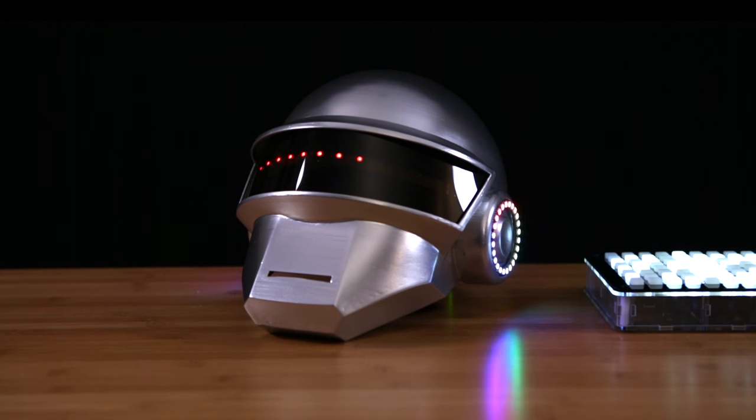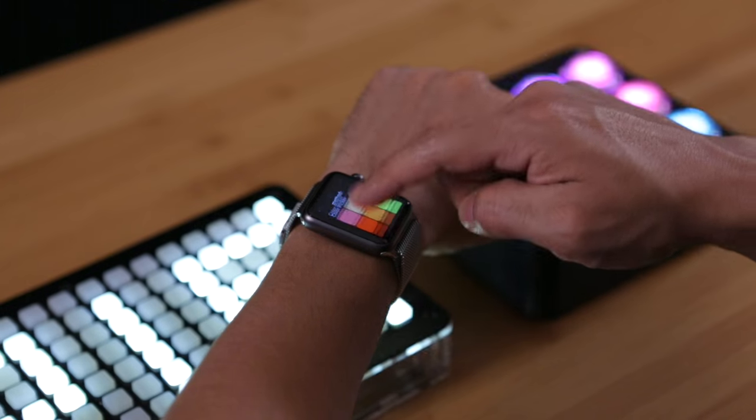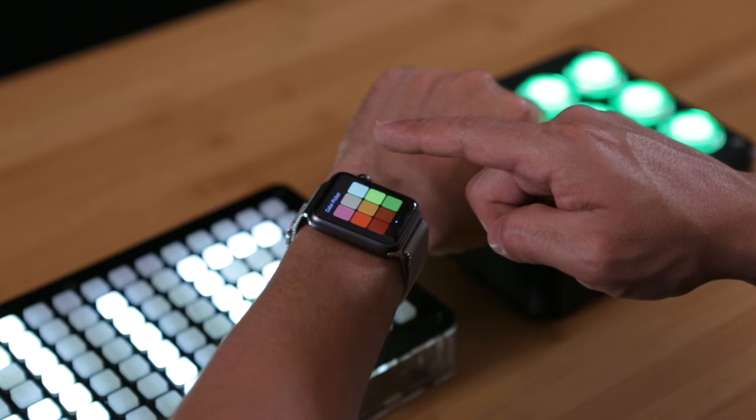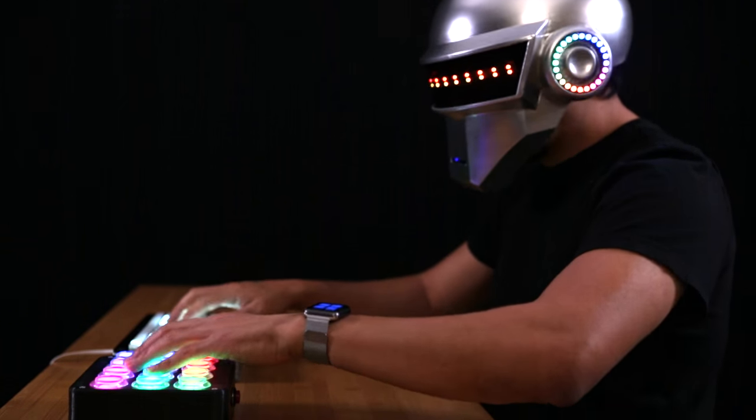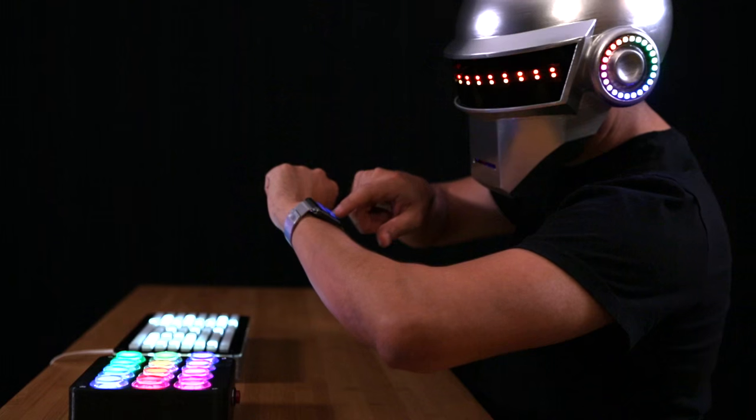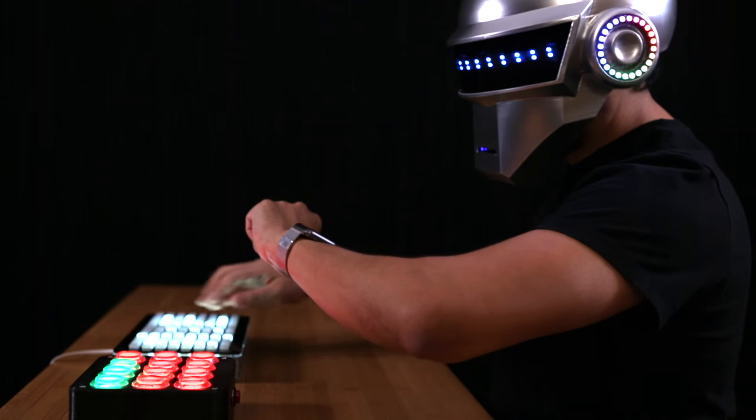With the build complete we can use the Adafruit Bluefruit LE Connect app for iOS or Android to change the brightness or color of the LEDs with the color picker. We can also use the control pad to trigger sweet animations right from your smartwatch.